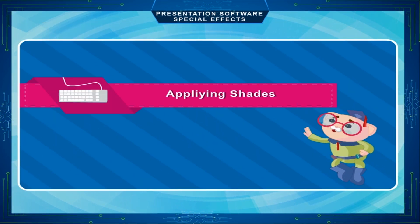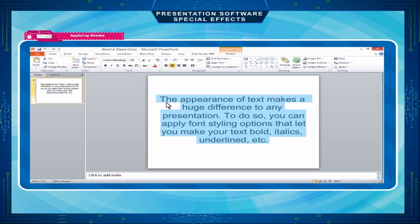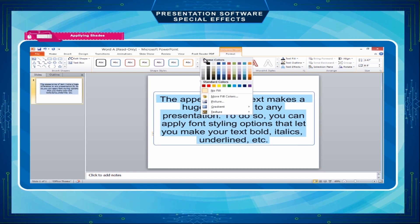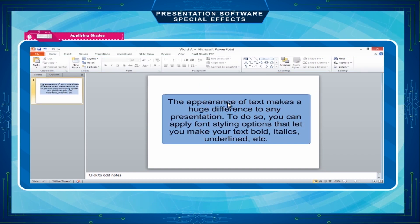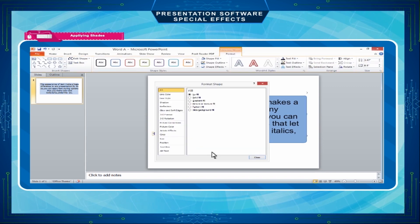Applying Shades. Select the object — such as a text box, shape, or chart — to which you want to apply shades. Click on the Shape Fill option in the Drawing group on the Format tab to choose the shade fill color. Choose the color that you want to fill and click on that color. You can customize the color further by right-clicking on the object and choosing the Format Shape option.